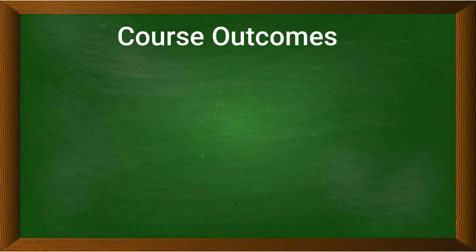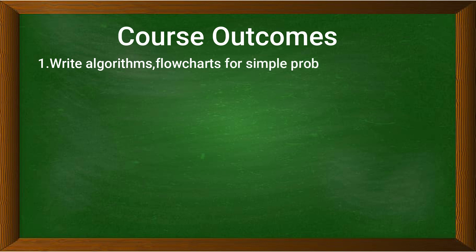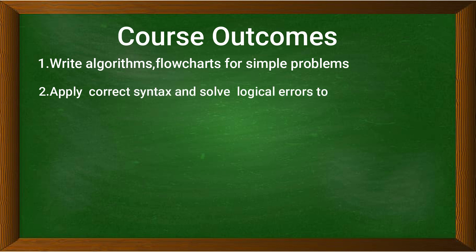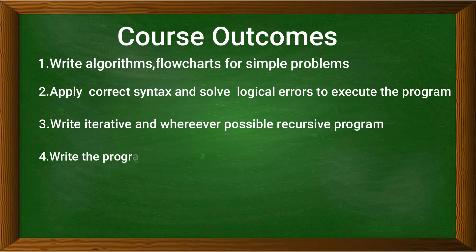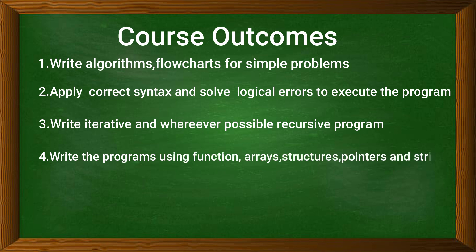Let us understand the laboratory course outcomes. The first outcome is students will be able to write algorithms and flowcharts for simple programs. The second is students will be able to apply correct syntax and solve logical errors to execute the program. The third is students will be able to write iterative and wherever possible recursive programs. The fourth is students will be able to write programs using functions, arrays, structures, pointers and strings to solve problems.